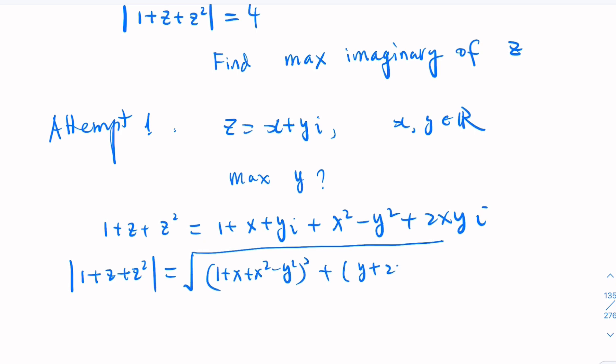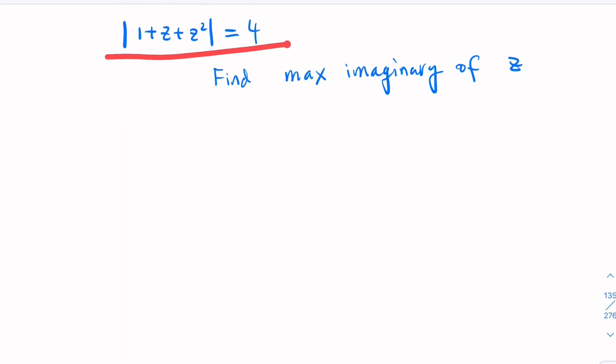And then this would be y plus 2xy squared, and then you're given that this constraint is equal to 4 and you try to find max of y. All right, wrong direction. Let's give up.